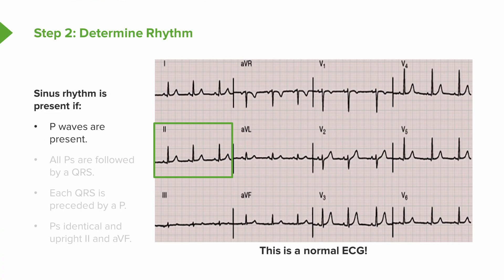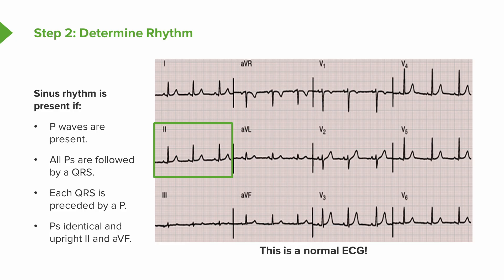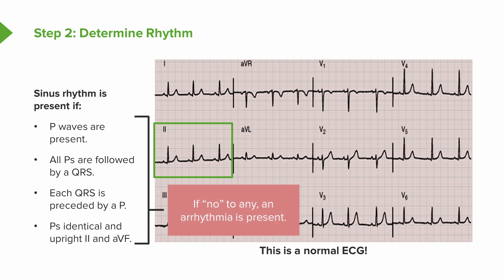You'll notice there's sinus rhythm: each QRS is preceded by a P wave, meaning the atrium depolarizes before the ventricle. All the P waves are followed by a QRS — there's no blockage of the beat as it goes down through the heart. Each QRS is preceded by a P, and the P's are all identical — upright in leads 2 and AVF, nice and narrow. If any of those conditions were not met, you'd be talking about an arrhythmia, and we're going to have whole lectures on arrhythmias later.